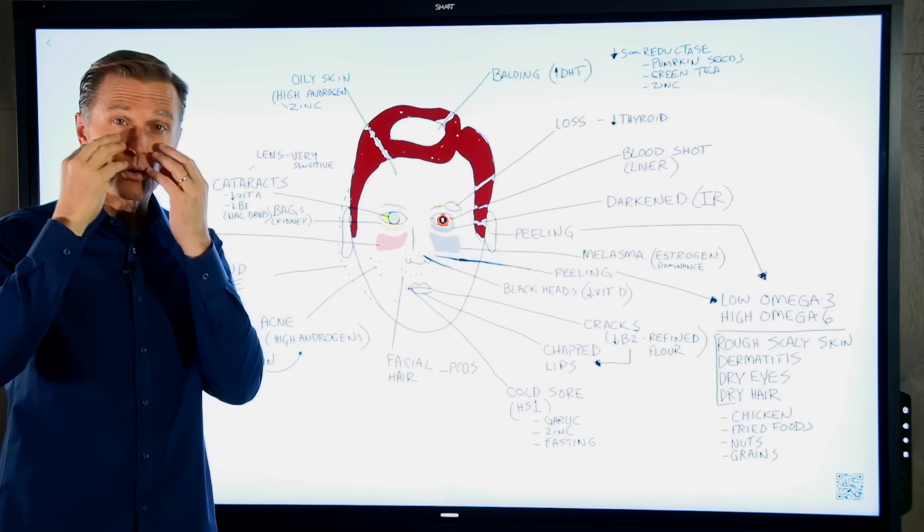Alright, the next thing is red cheeks. So you have these like either rosacea or red cheeks. You see, they're quite common. You see this in Cushing syndrome. Cushing syndrome is a high level of cortisol. That person's under a lot of stress, and that's one of the symptoms.